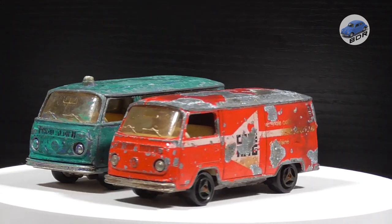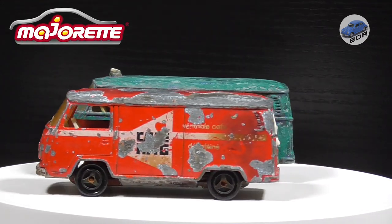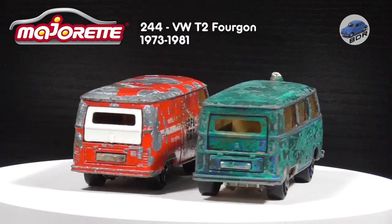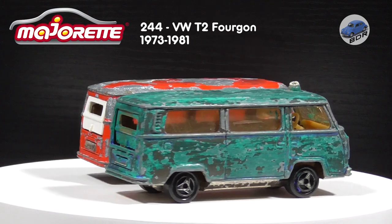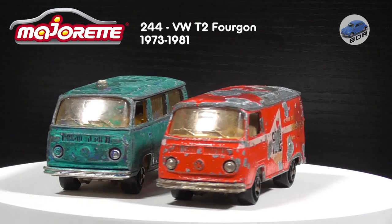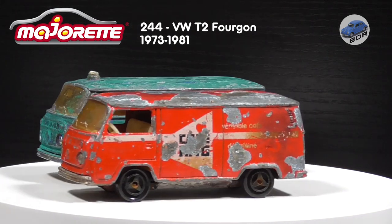Welcome to Belgian diecast restorations. I'm Johan and these are two very play-worn Majorette Volkswagen T2 vans or Fougon as they are called in French. These 1:60 scale models were first produced by Majorette in 1973 and remained in production until 1981.